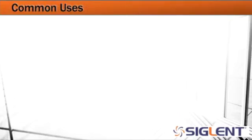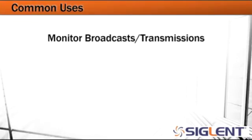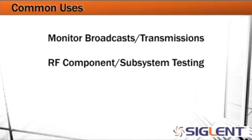Some common uses for a spectrum analyzer include monitoring broadcasts and transmissions — this would be FM, AM, Wi-Fi, Bluetooth — anything that we're communicating wirelessly from one place to another. We may want to see what the amplitude is and over what frequency ranges we may be concerned with. Another application area would be RF component and subsystem testing, which could include antennas, cables, amplifiers, filters, any number of RF components or subsystems. We want to make sure they're operating over the correct frequency range and delivering the amplitude we expect without any interference or other problems.